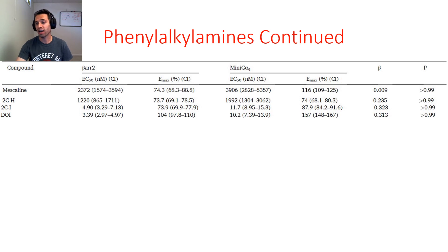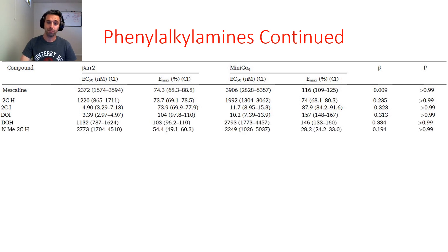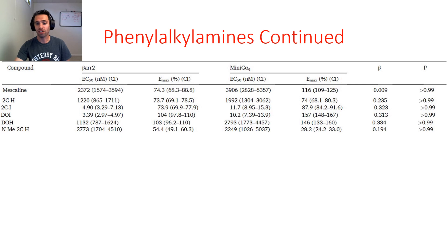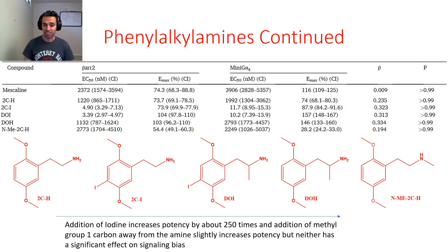We see a bit of a change in Emax going from 2CI to DOI but nothing super significant compared to the potency change. When we remove the iodine and change the position of the methyl group — as in DOH and NME2CH — we see a great loss in potency, which suggests that iodine plays a large factor in the incredible potency of these drugs. So we can conclude that addition of an iodine increases potency by about 250 times, and addition of a methyl group one carbon away from the amine slightly increases potency, but neither has a significant effect on signaling bias.